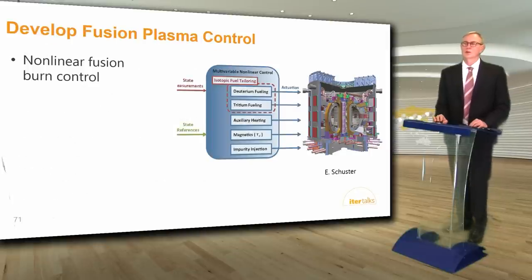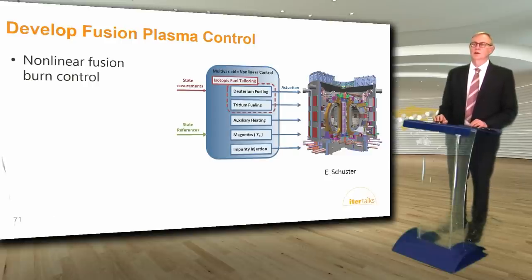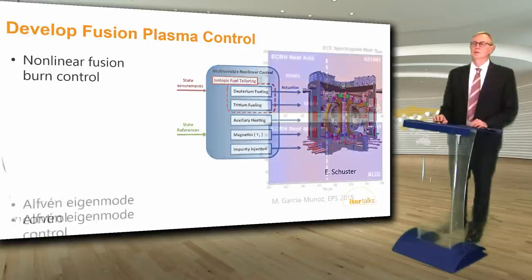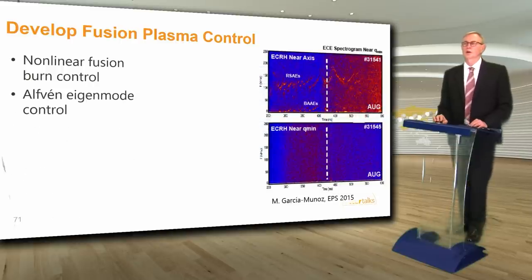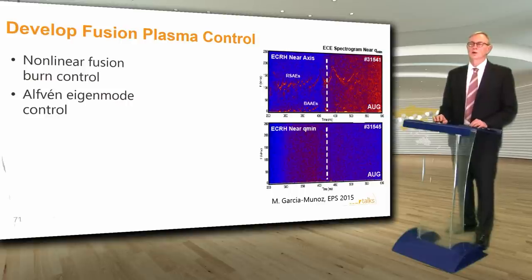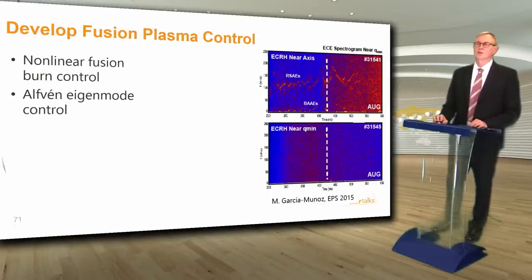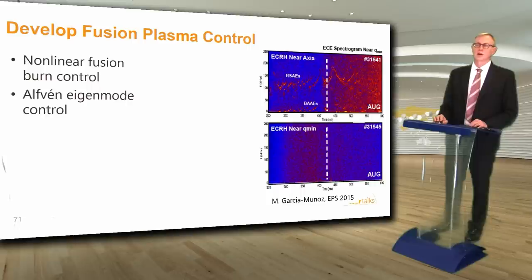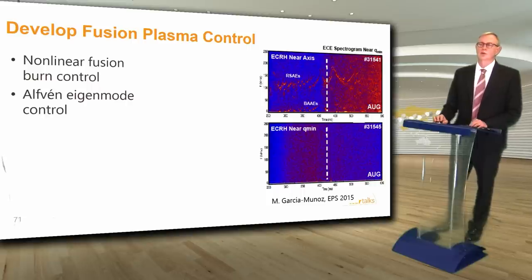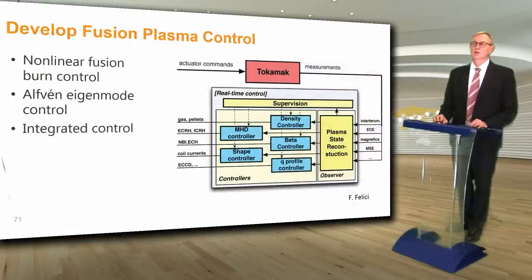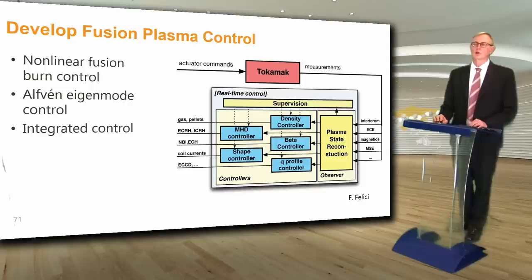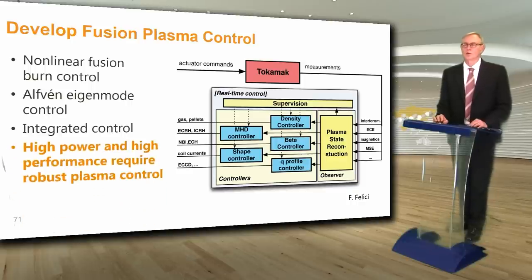The additional plasma control capability needed for fusion power operation includes nonlinear fusion burn control of the DT isotope mix, the auxiliary heating power, the energy confinement time, and impurity injection to control the fusion burn. Fast ions produced by neutral beam injection, ICRF heating, and energetic alpha particles produced by fusion reactions are expected to drive unstable high-frequency alpha-particle eigenmodes that can redistribute fast ions and reduce the fusion burn. All of the control functions need to work simultaneously or on demand in an integrated way with shared actuators for multiple control functions. High power and high performance require robust control.